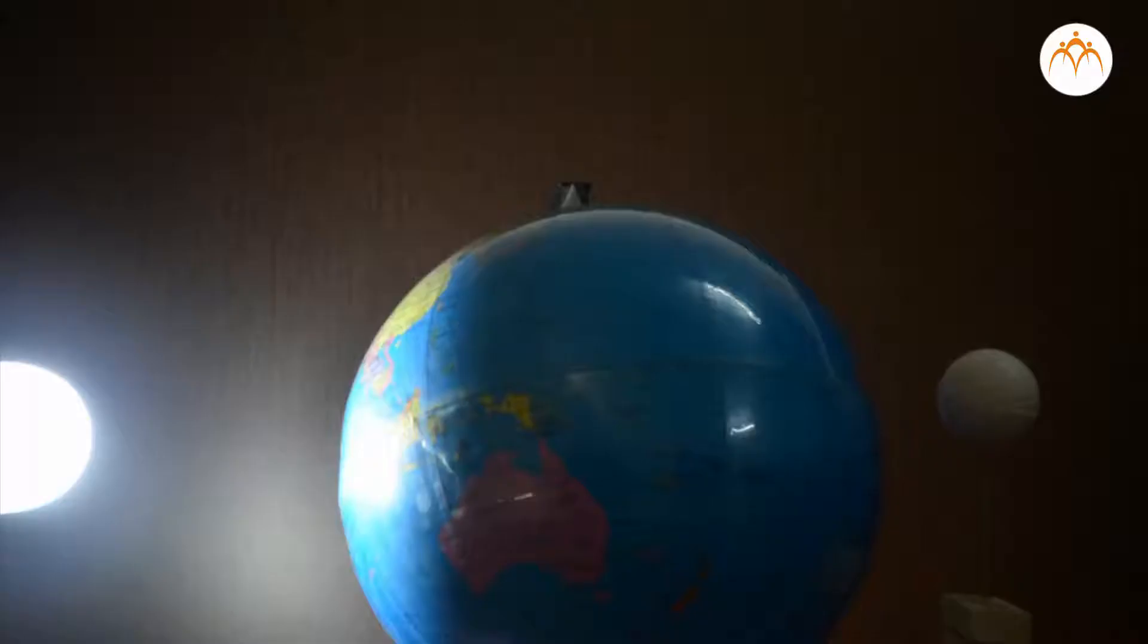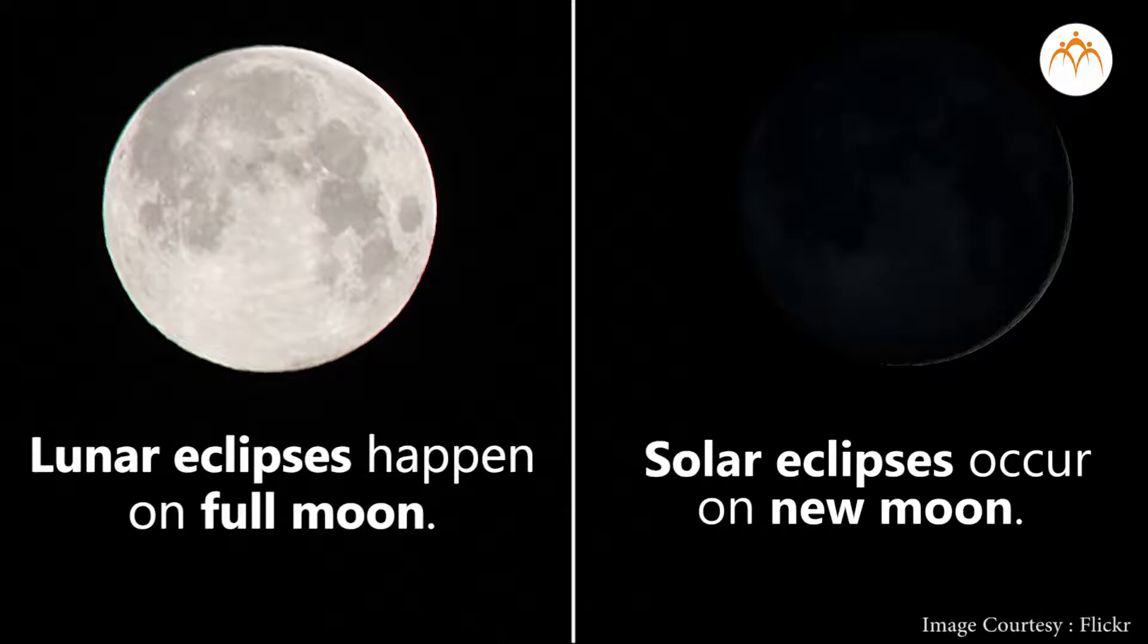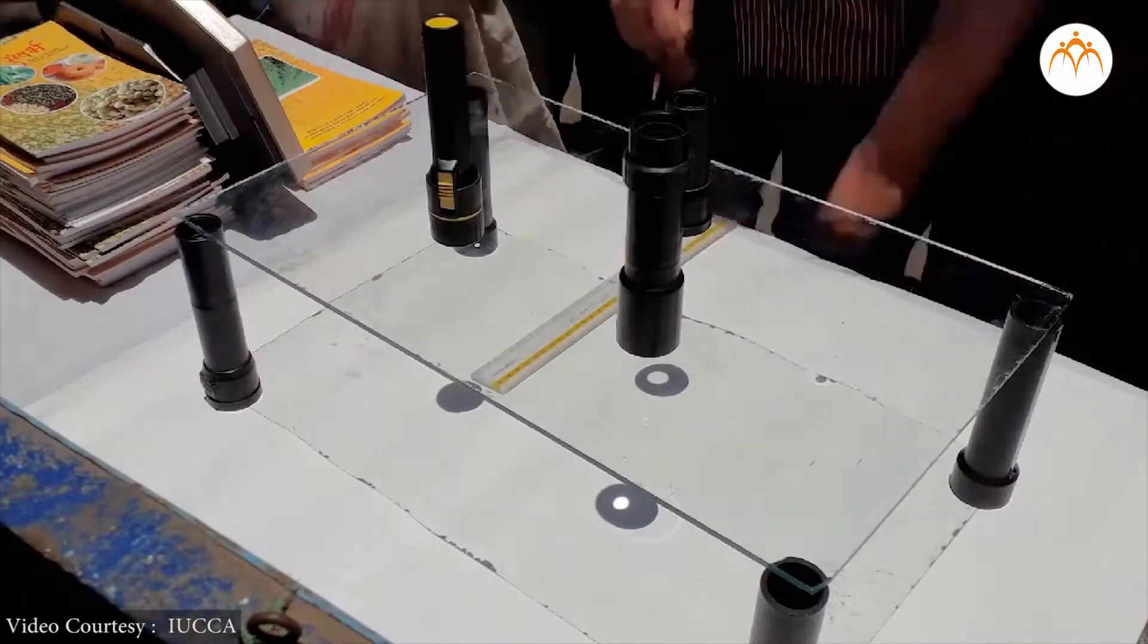We can also replace the large balloon with the actual Earth model we have in the school. Lunar eclipses happen on full moon and solar eclipses occur on new moon.